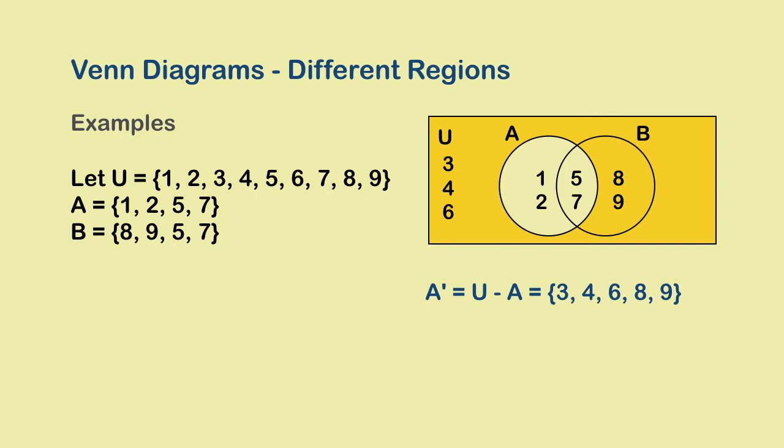This region is the entire universal set except the region that also belongs to set A. So, this is nothing but U-A. We also call it A complement.